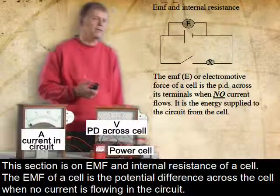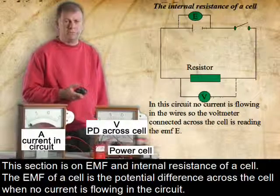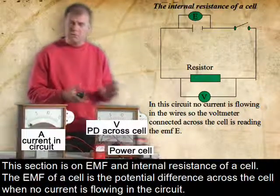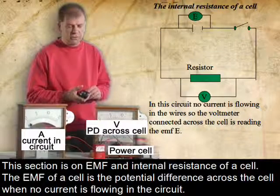This section is on the EMF and internal resistance of the cell. The EMF of the cell is the potential difference across the cell when no current is flowing in the circuit.